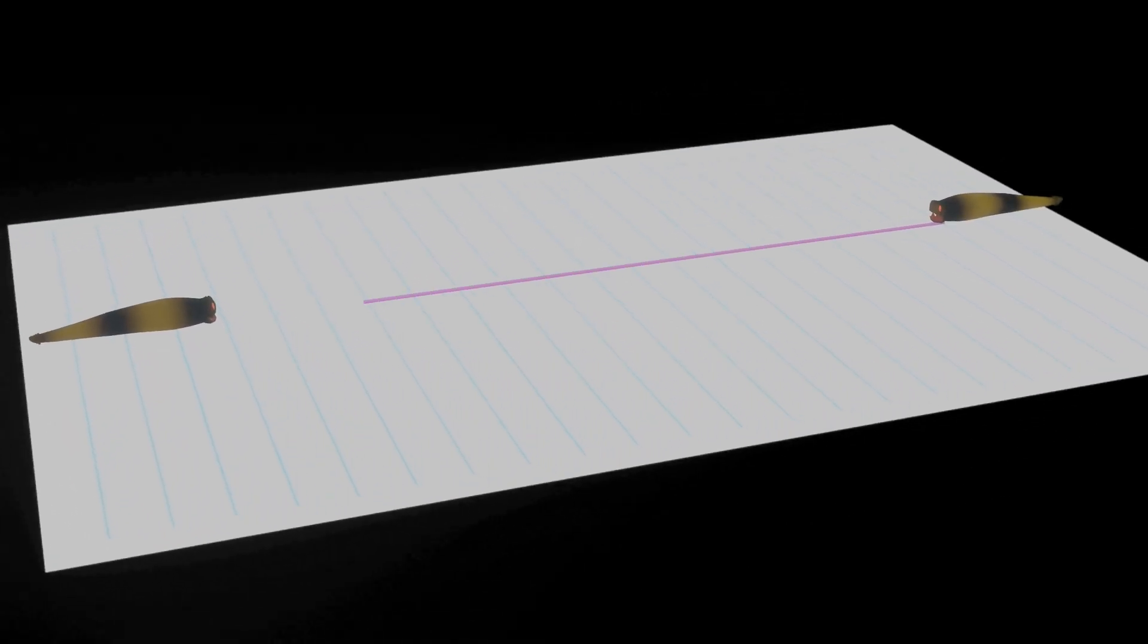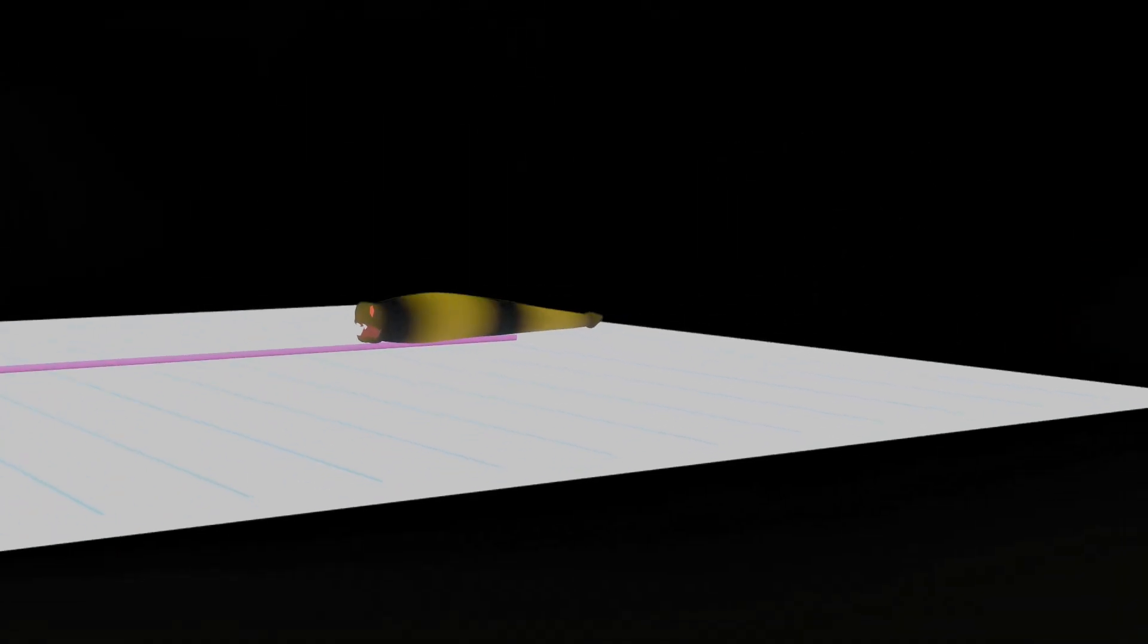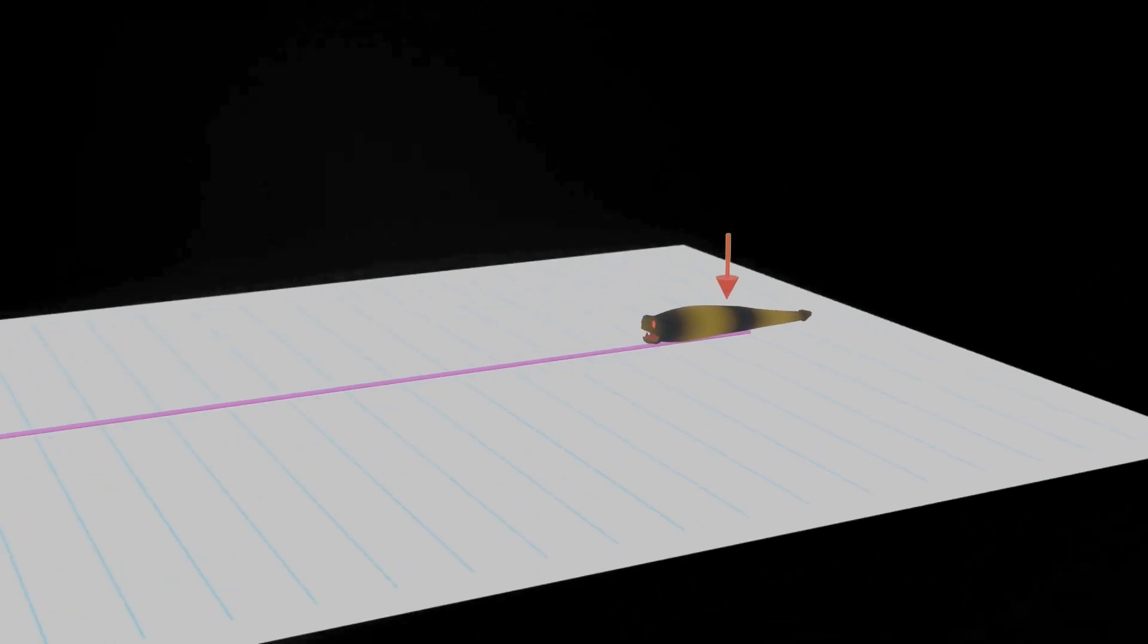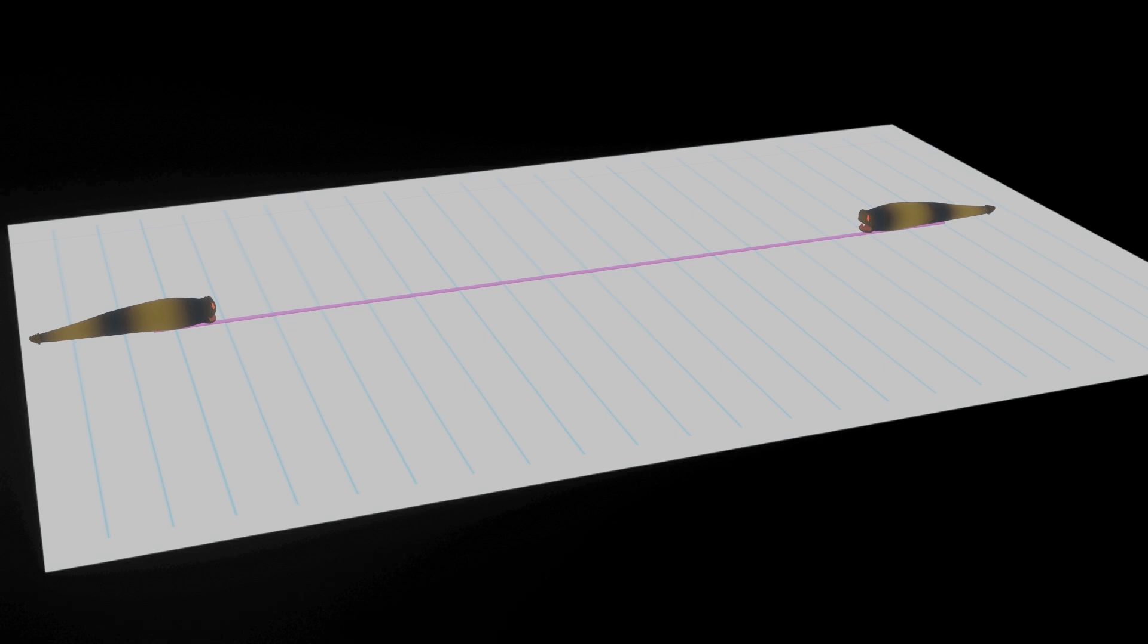Now, draw a straight line connecting them. Imagine one worm traveling along this line to visit the other. Along the way, the worm might feel various forces, like gravity, acting on its tiny body. These forces are invisible, though, so the worm can't see them. All it perceives is its universe, which is this flat sheet of paper.